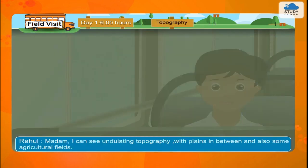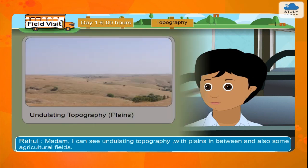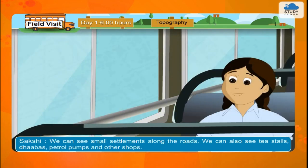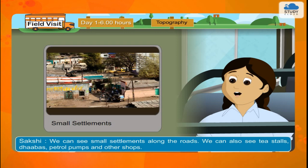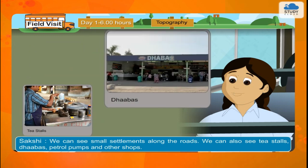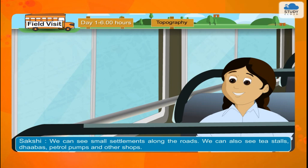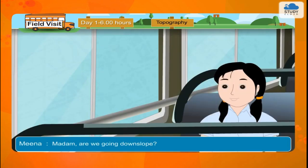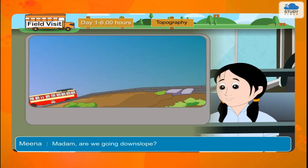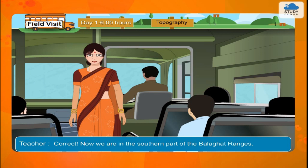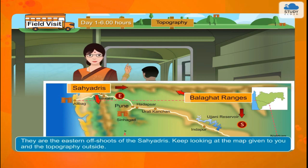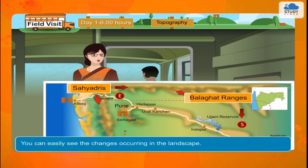Topography. Rahul: Madam, I can see undulating topography with plains in between and also some agricultural fields. Sakshi: We can see small settlements along the roads. We can also see tea stalls, dhabas, petrol pumps and other shops. Teacher: Yes. Meena, your observations? Meena: Madam, are we going downslope? Teacher: Correct! Now we are in the southern part of Balaghat Ranges. They are the eastern offshoots of the Sayadris. Keep looking at the map given to you and the topography outside. You can easily see the changes occurring in the landscape.